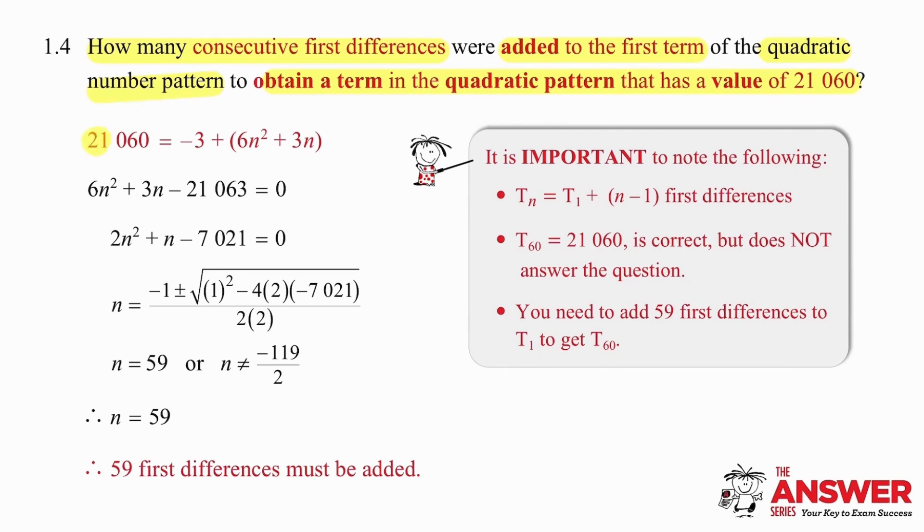This is challenging but really we need to do what we are told in this question. So we're going to set up an equation the answer to which is going to be 21,060. We are going to add the first term of the quadratic pattern and the sum of all the first differences and work out how many first differences we need to add by working out the value of n.